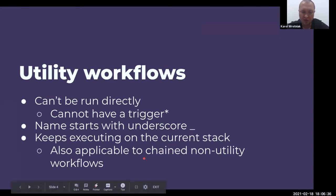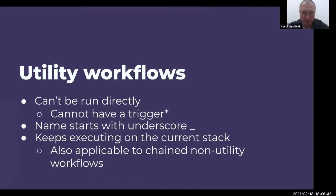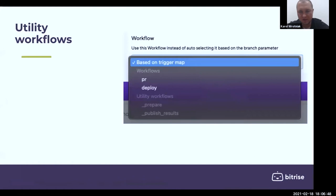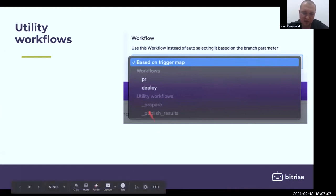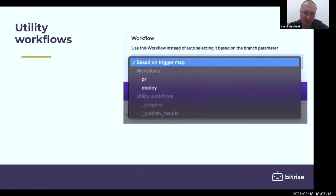This is true also for non-utility chained workflows via before run and after run. If you open the Bitrise.io website application page on the run pop-up, you can see that you can choose a workflow to be run — and utility workflows are also listed there, but they are grayed out. They cannot be started. That's the first difference between utility workflows and normal, regular workflows.